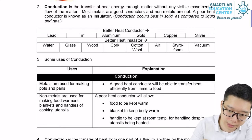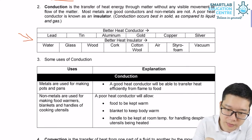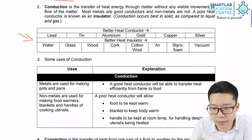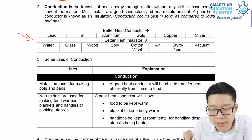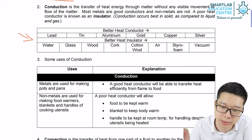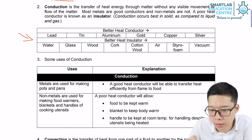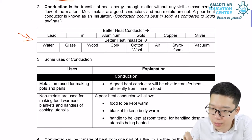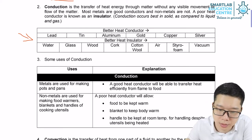So let's look at the table over here. Lead, tin, aluminum, gold, copper, silver — all these metals are heat conductors. Water, glass, wood, cork, cotton, air, styrofoam, and vacuum — they are insulators.